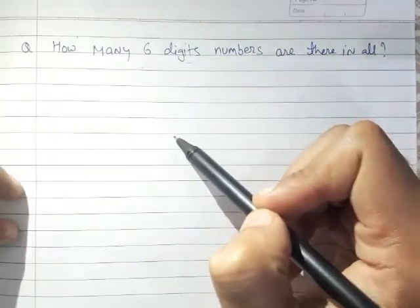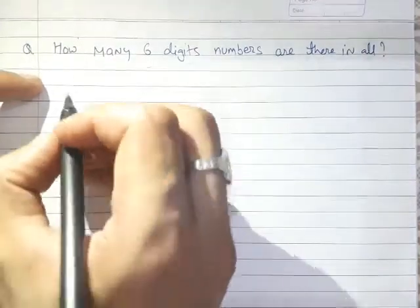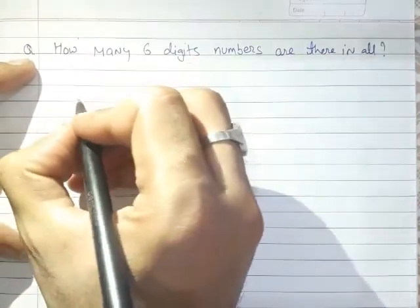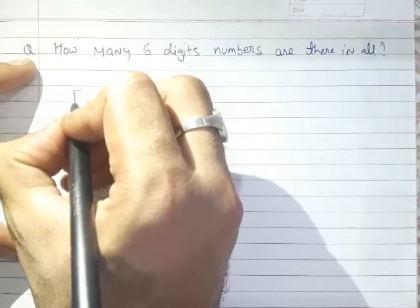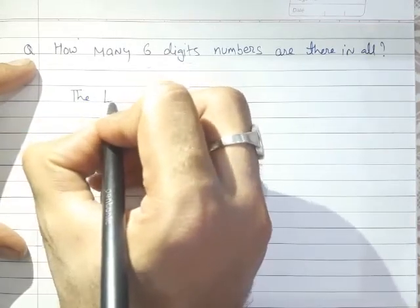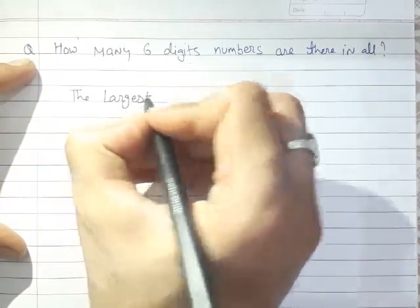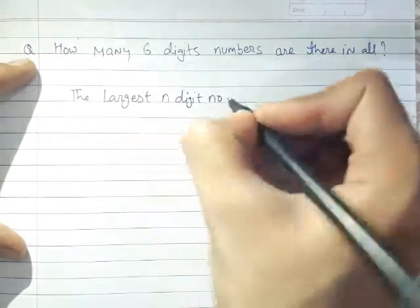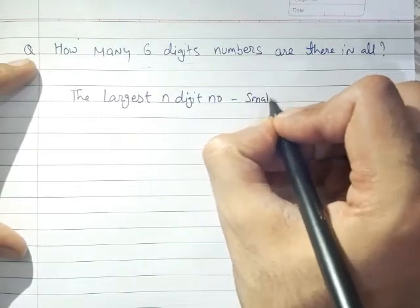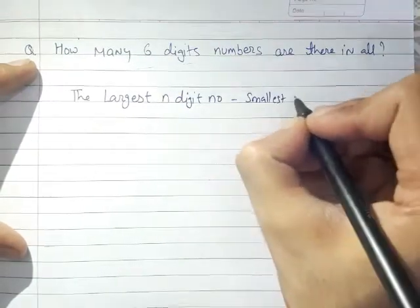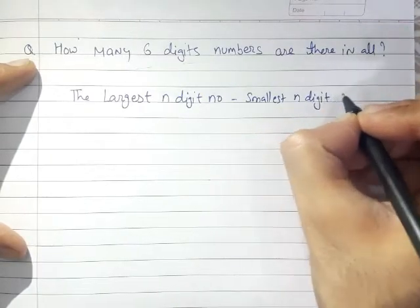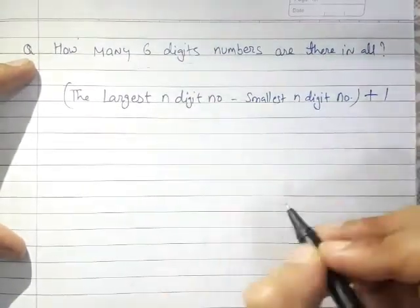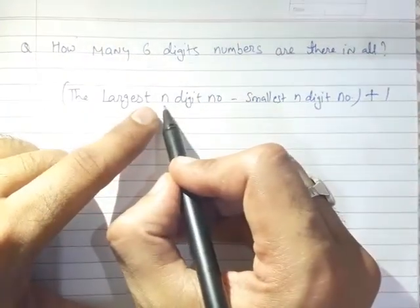To solve such questions, we will use one formula. The formula is: the largest n-digit number, minus the smallest n-digit number, plus one.